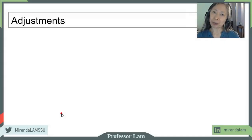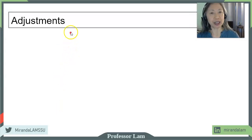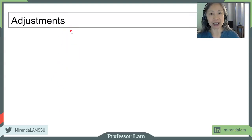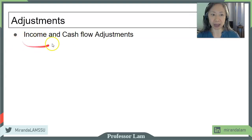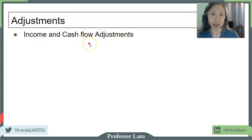Whether we are using the discounted cash flow method or the multiples method, we need to make adjustments to the cash flows and the income. The reason is that there are oftentimes unique situations that apply to the current owner that no longer apply to the new owner. So we will need to adjust either income or EBITDA — in this case, income does not mean net income. Those adjustments apply to the multiples method, while cash flow adjustments apply to the discounted cash flow method.